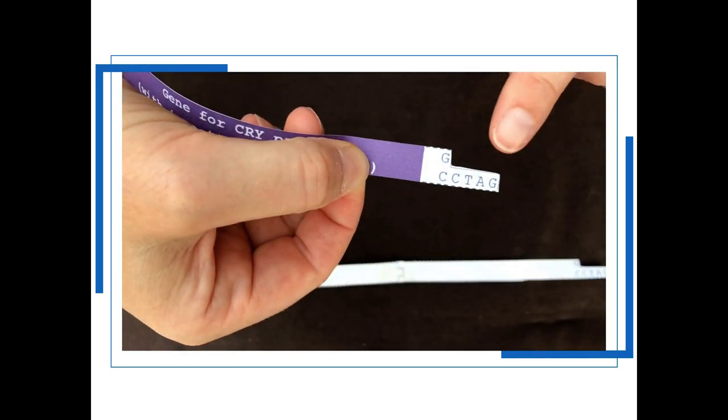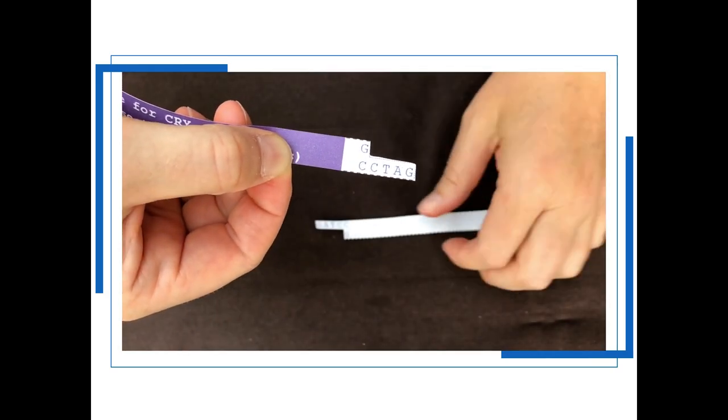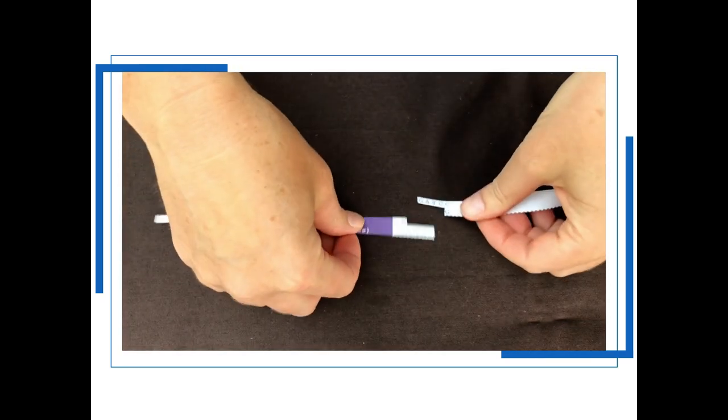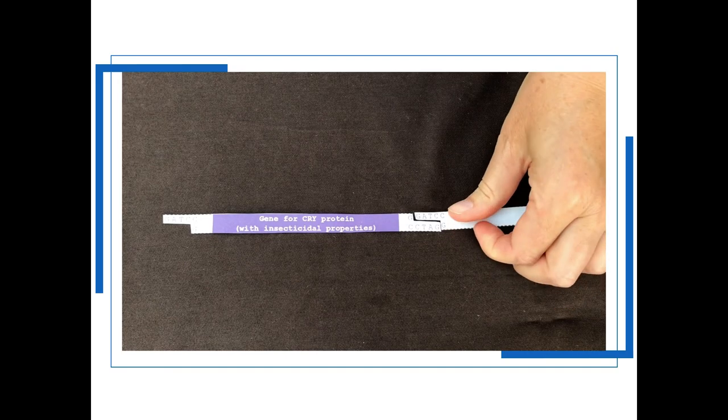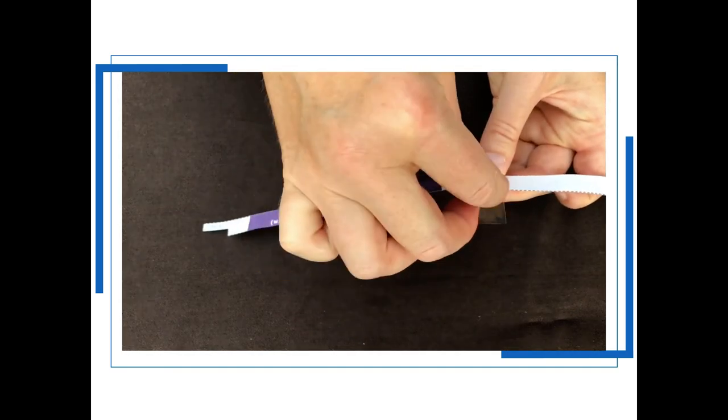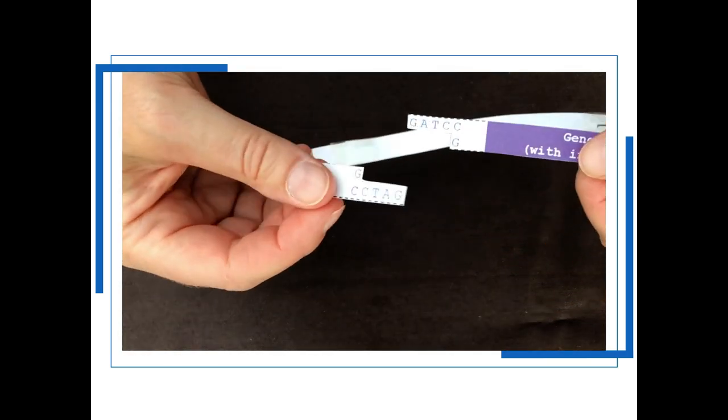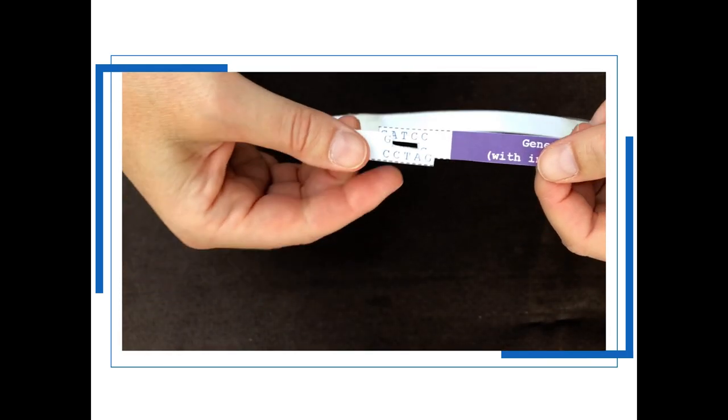So although it's not to scale we can get rid of the rest of the bacterial chromosome and if you look at the four base pair overhangs you would get base pairing between the C and the G and the T and the A of the sticky ends on the end of the gene for the desirable trait and within the plasmid.